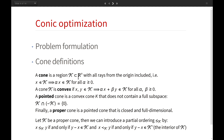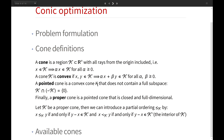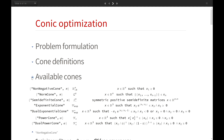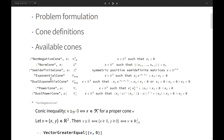A cone is defined as a subspace of R^n, and if we have a point x in the cone, then the ray from the origin that includes this point will also be included in the cone. There are a few more properties necessary to define a proper cone so that we can talk about partial ordering and inequalities. Here are the cones available in Mathematica: non-negative, norm, semidefinite, exponential, dual exponential, and power cone. These are enough to model almost all convex optimization problems into conic form.